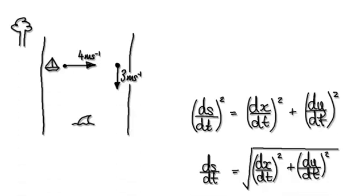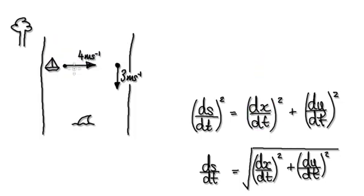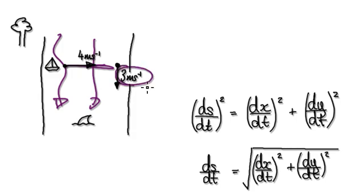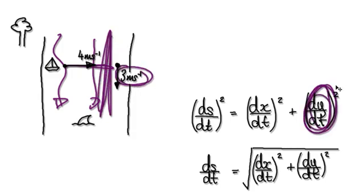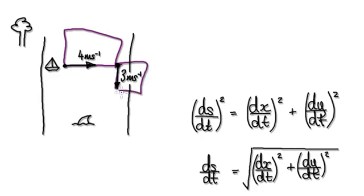In the previous video, we saw that when you're in a boat traveling 4 meters per second in the x direction and the current is flowing 3 meters per second in the y direction, we can use Pythagoras to obtain the resultant speed.